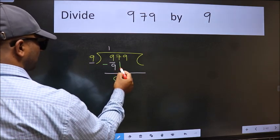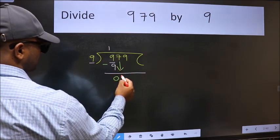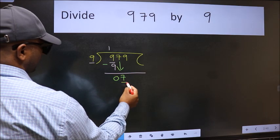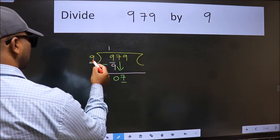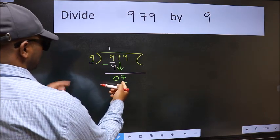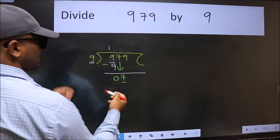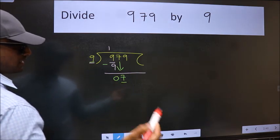After this, bring down the next number. So 7 down. Now here we have 7 and here 9. 7 is smaller than 9, so we should bring down the second number.